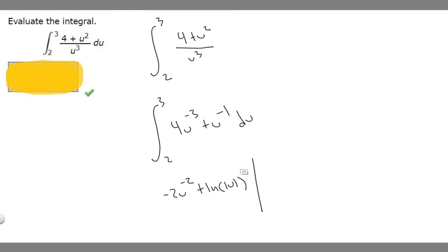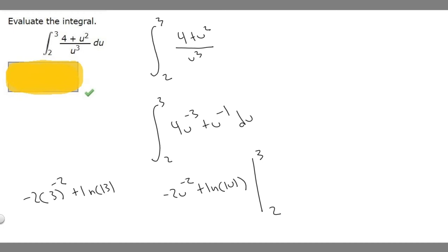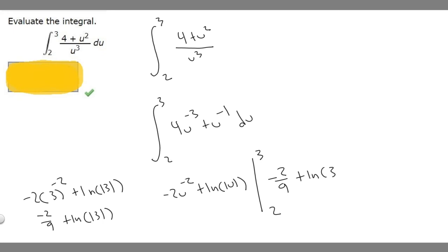Now we have our antiderivative and we need to evaluate it at our bounds from 2 to 3. We plug in the upper bound first, then subtract the lower bound. Plugging in 3: minus 2 times 3 to the minus 2 plus ln|3|. Since 3 to the minus 2 is 1 over 9, this becomes minus 2 over 9 plus ln(3).